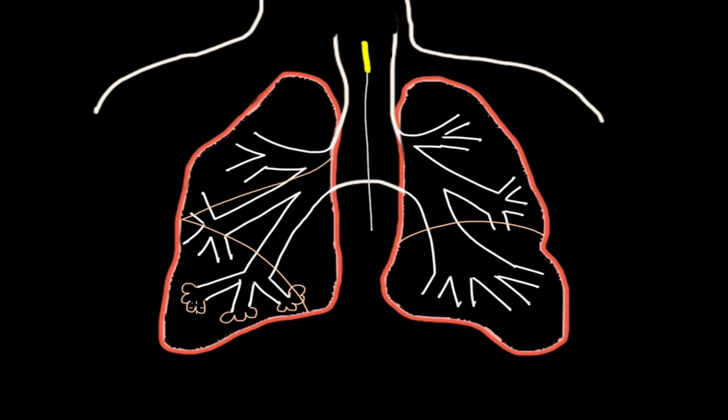The alveoli is really important because that's where the gas exchange happens. This is where ultimately the oxygen is going to end up and where we'll pick up carbon dioxide to exhale out.